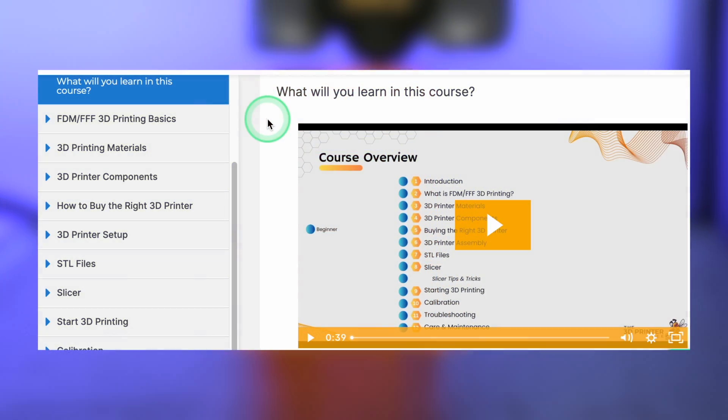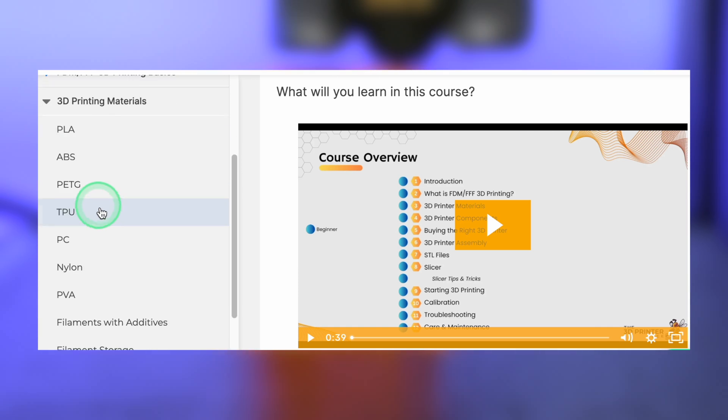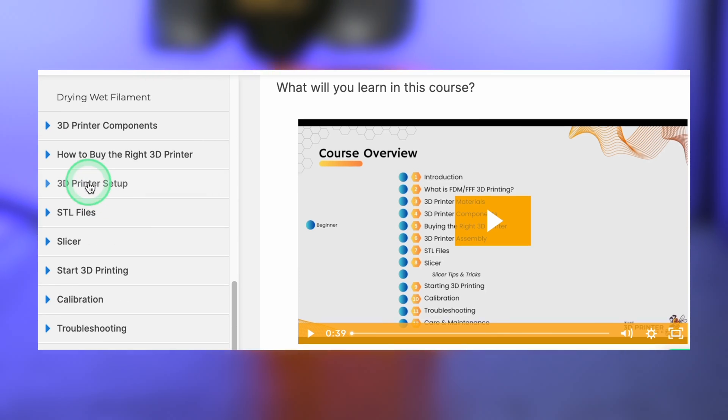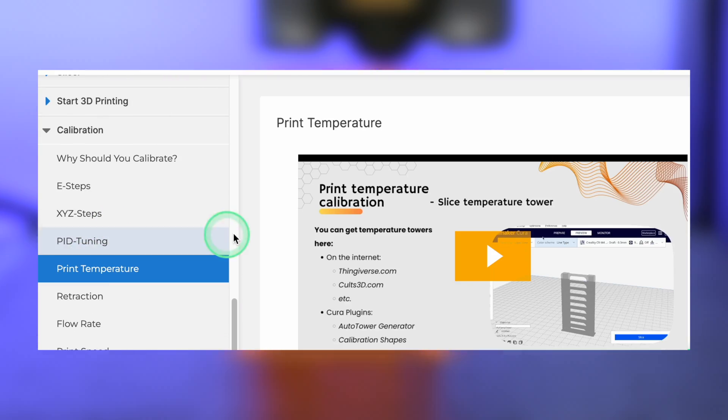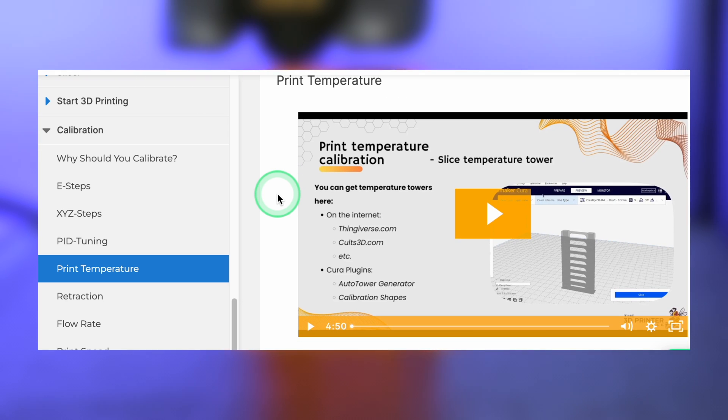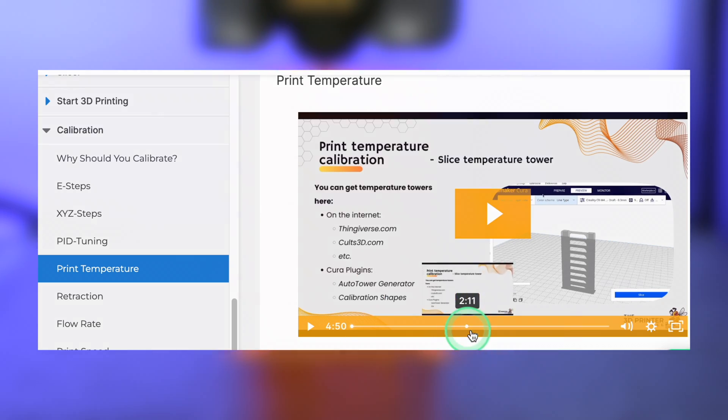In my 3D printing course I show you in detail how to write the appropriate script for the temperature tower and also how to calibrate your 3D printer from start to finish to get perfect results every time. It contains over 60 video lessons that you can access at any time and anywhere. You can find the link to it in the video description.